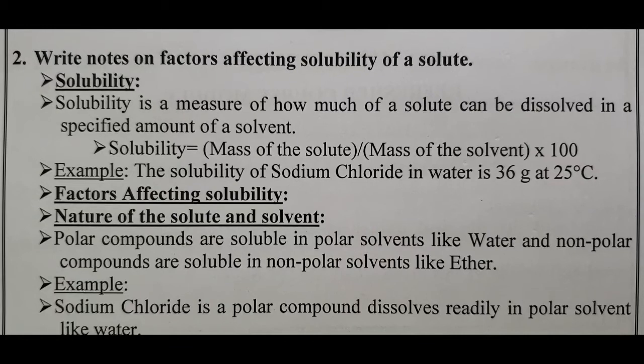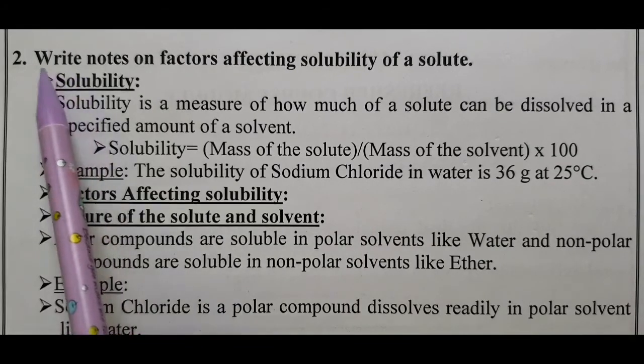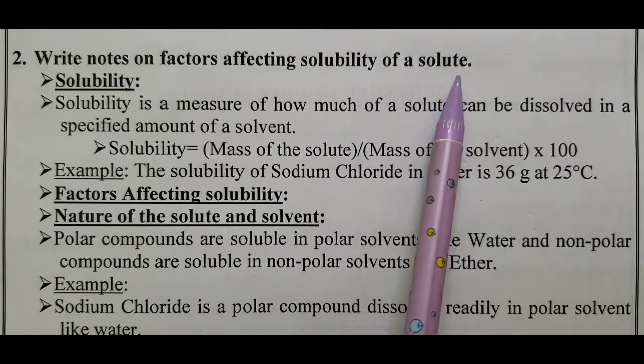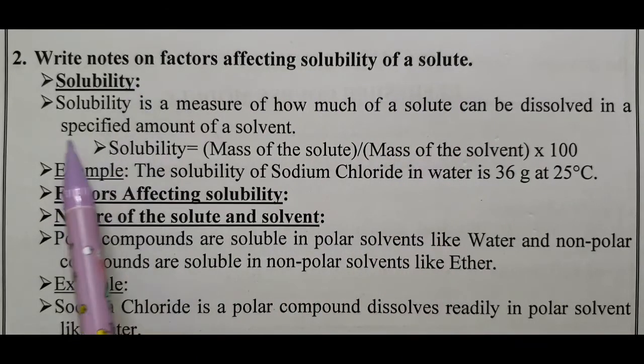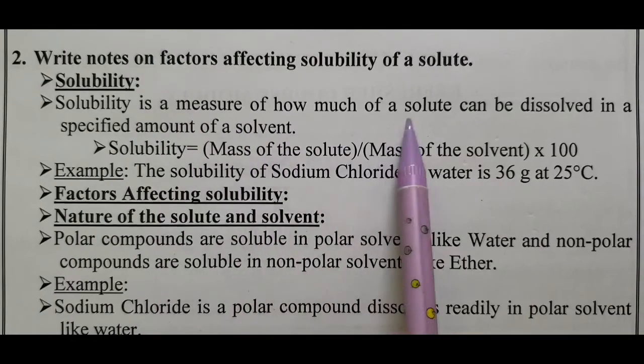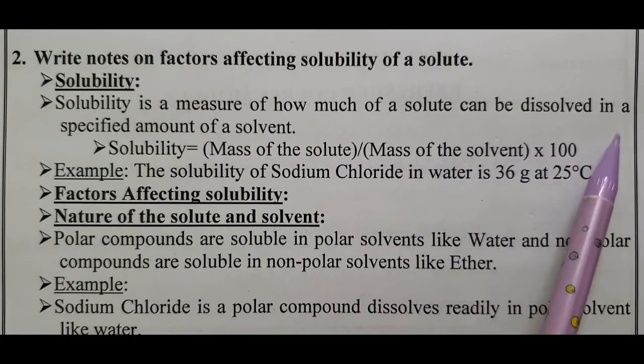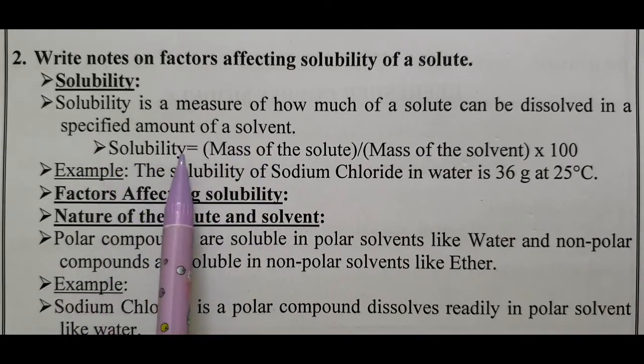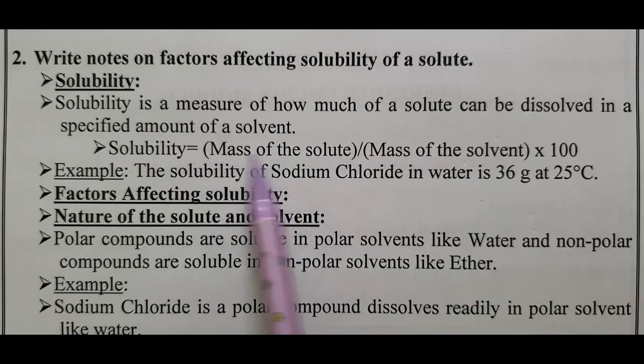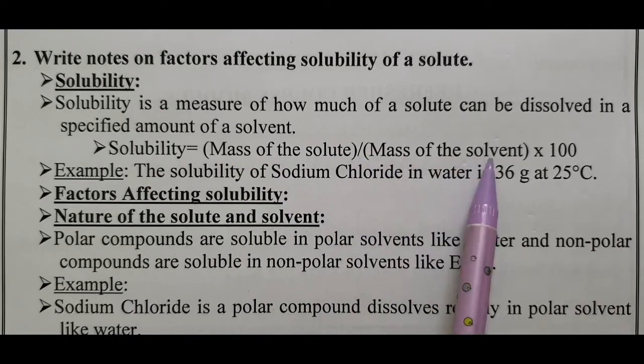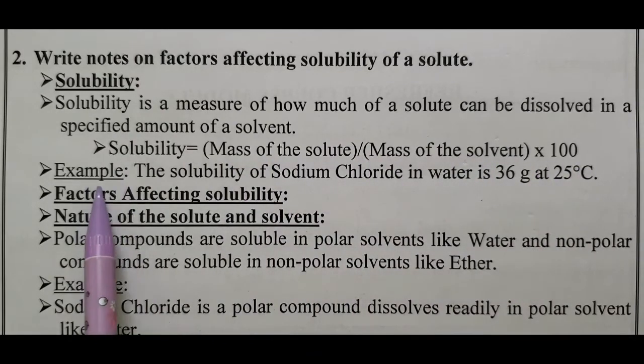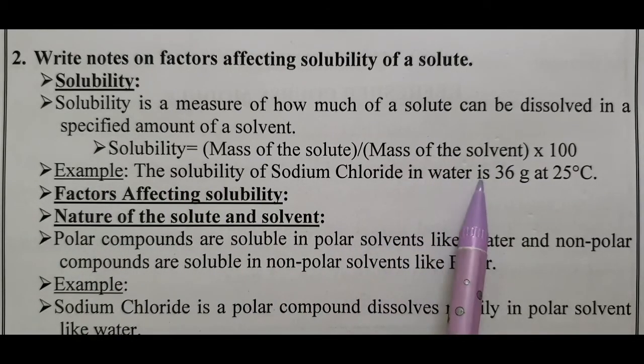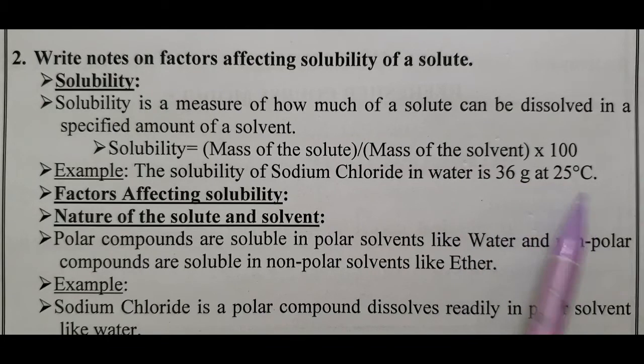Come to the second assessment part. Write notes on factors affecting solubility of a solute. Solubility is a measure of how much of a solute can be dissolved in a specified amount of a solvent. Solubility equals mass of the solute divided by mass of the solvent times 100. For example, the solubility of sodium chloride in water is 36 grams at 25 degrees Celsius.